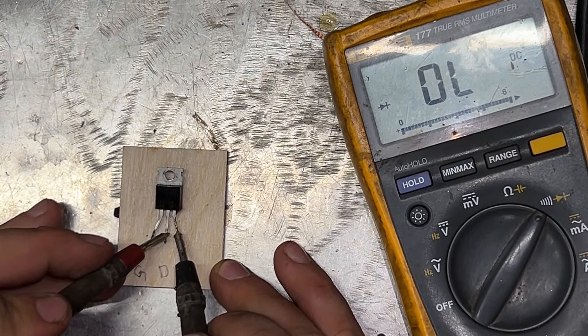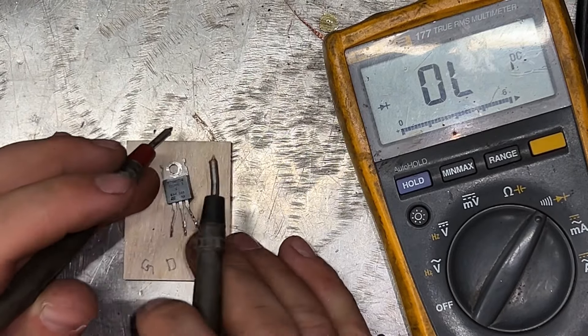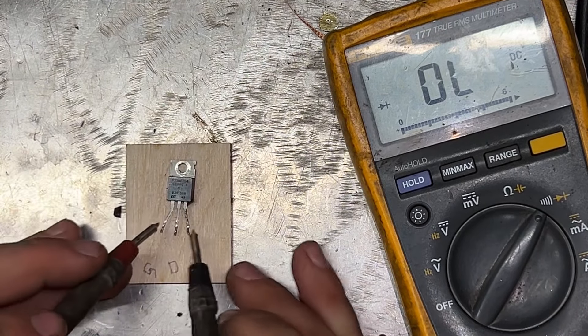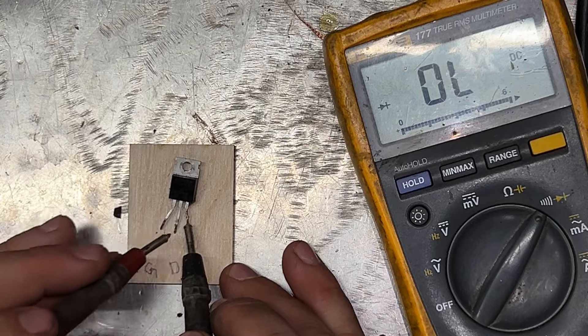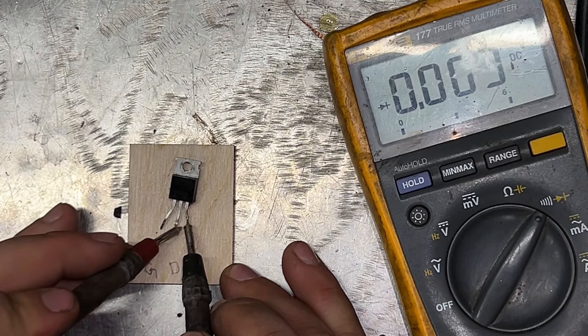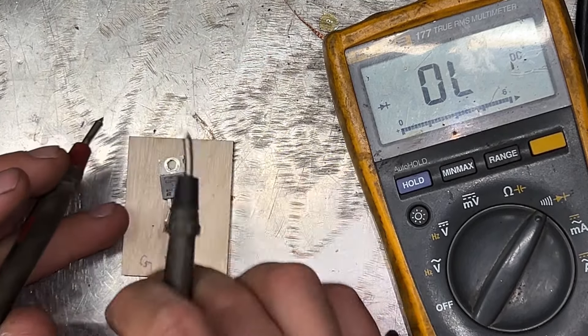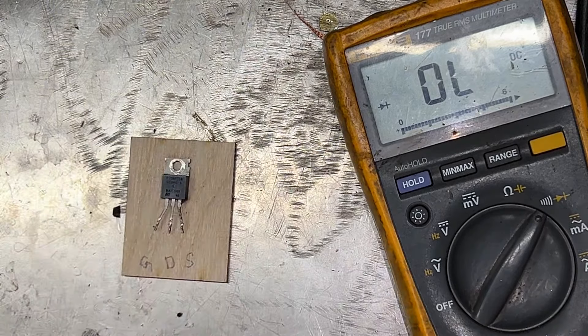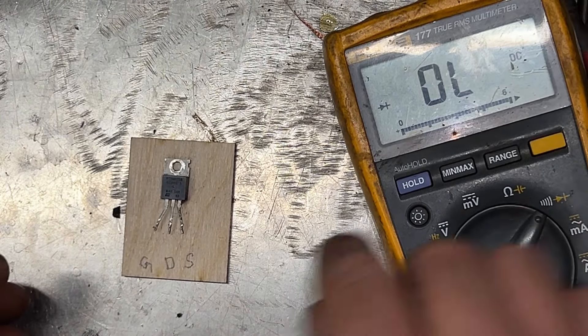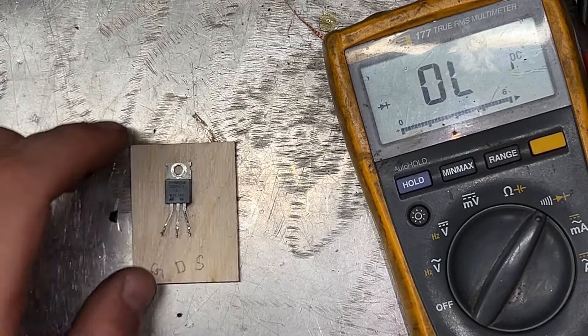This is how you test a MOSFET. This one is good. If you have any beeping when you touch it and it's beeping, this means it's shorted between the drain and the source. And you need to buy a new one. That's how you test a MOSFET.